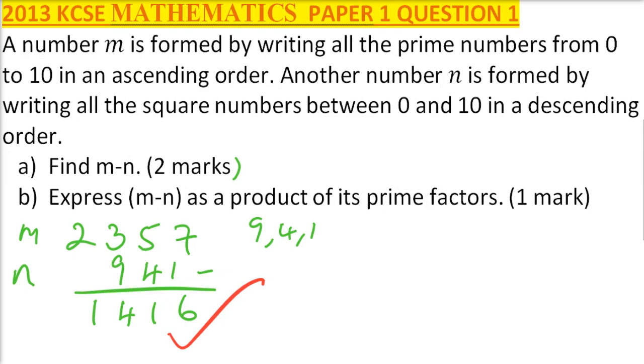Number 2, we have to express m minus n as a product of its prime factors. So we can draw our diagram there, and say this is our number, 1416. We divide by 2, we will get 708. You can use your calculator to do that.